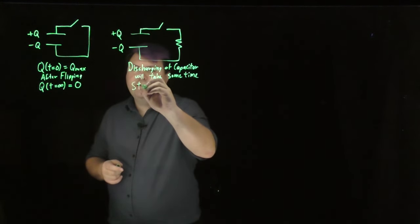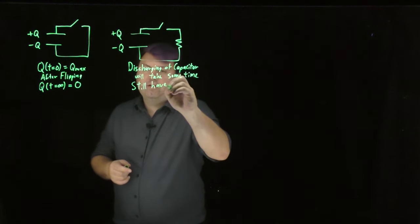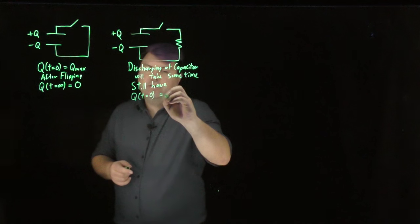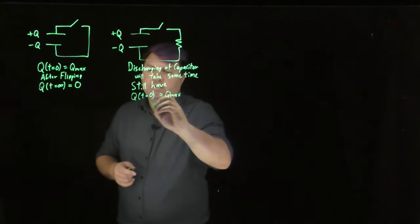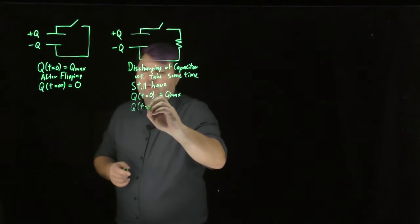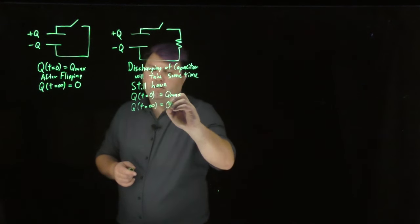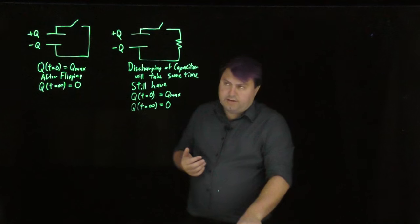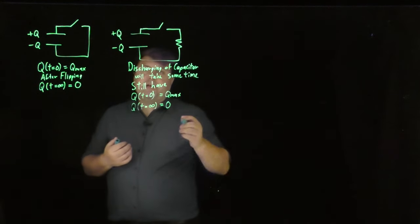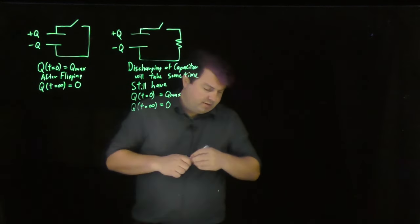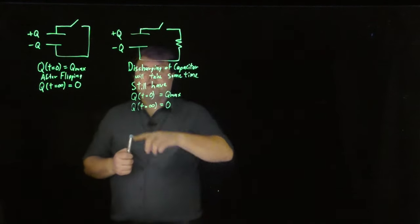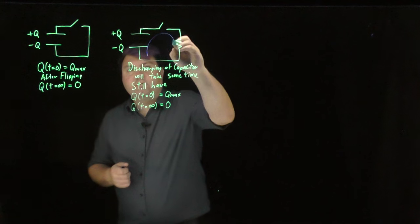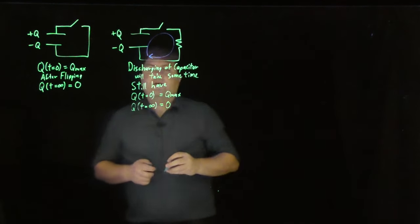So we still have q of t equals zero equals q max, q of t equals infinity equals zero. So what can we do with this then? We could take a look at this as a loop rule. We can draw a Kirchhoff's loop rule of this.